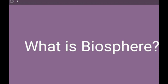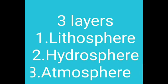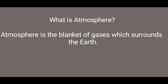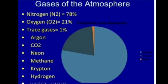First, we saw about the biosphere. What is biosphere? The combination of all three layers — lithosphere, hydrosphere, and atmosphere — is called a biosphere. Next, we saw about the atmosphere. Atmosphere is a blanket of gases which surrounds the earth. We also saw the various gases present in the atmosphere: oxygen, nitrogen, carbon dioxide, and other inert gases such as argon, neon, krypton, and xenon.